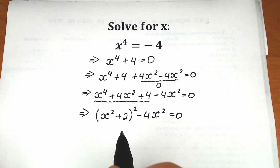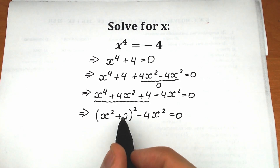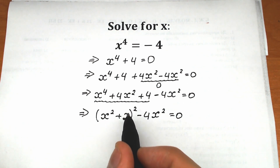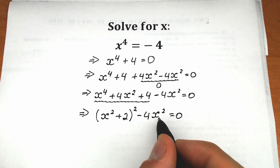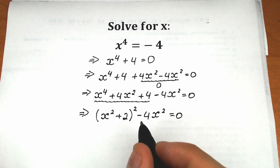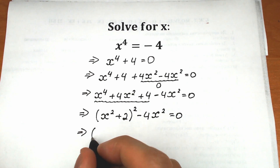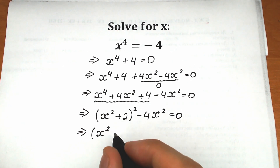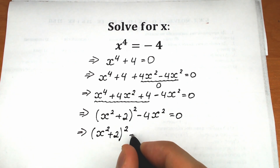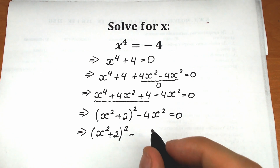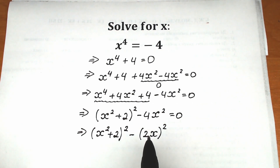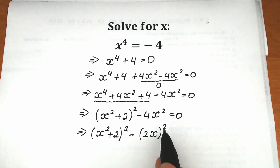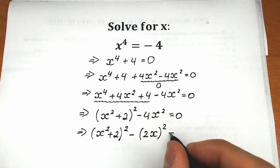We have one expression to the second power and another expression to the second power, so we can write minus 4x squared as minus (2x) to the second power. This gives us (x squared plus 2) squared minus (2x) squared equal to zero.